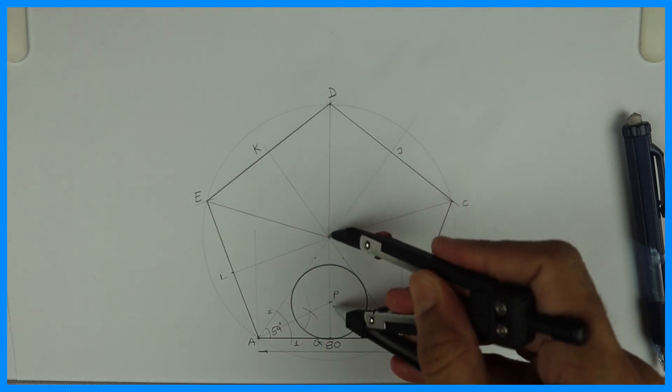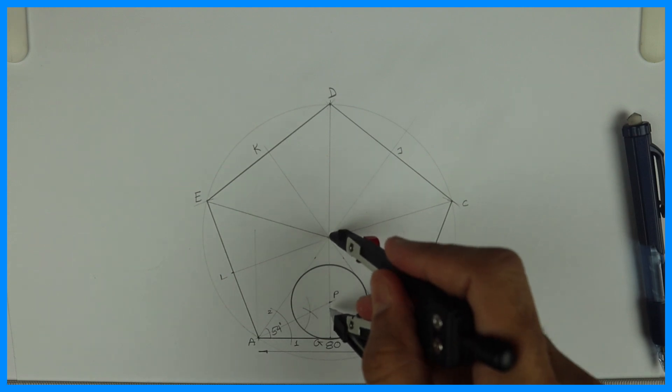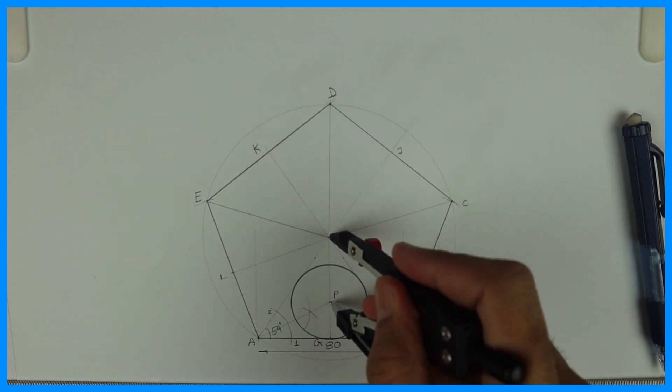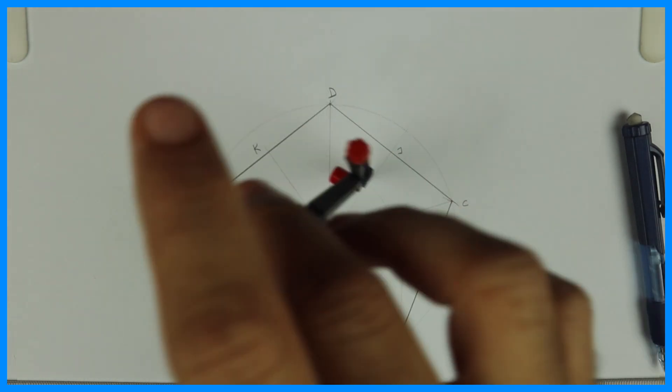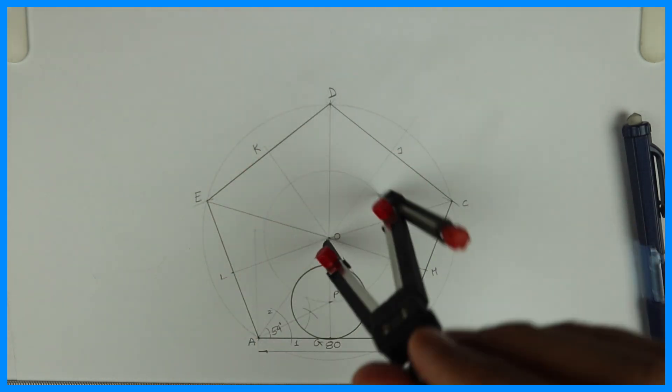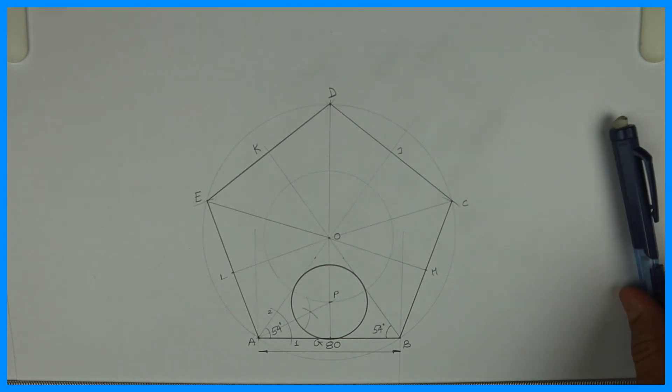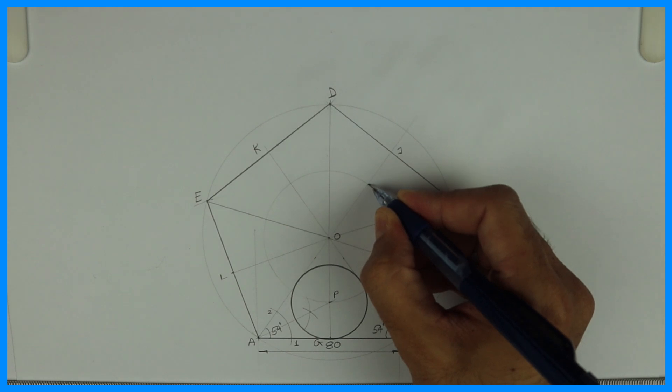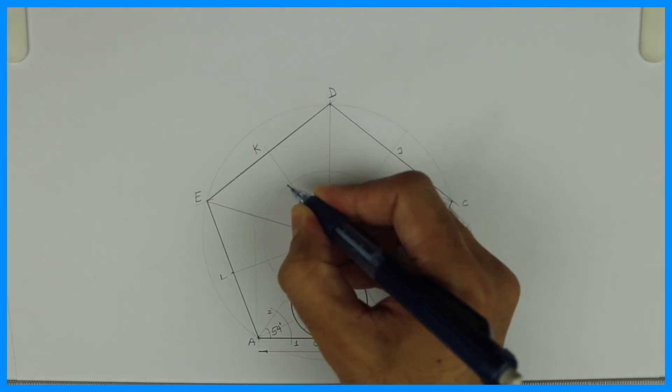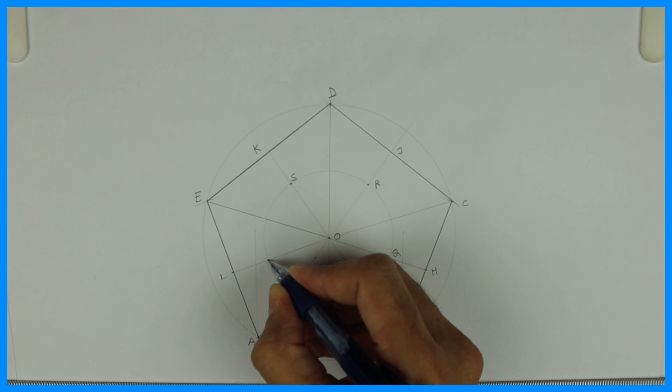What I will do is transfer OP. I'll take O to P and draw a light circle. With this, I will get all the respective centers Q, R, S, and T.